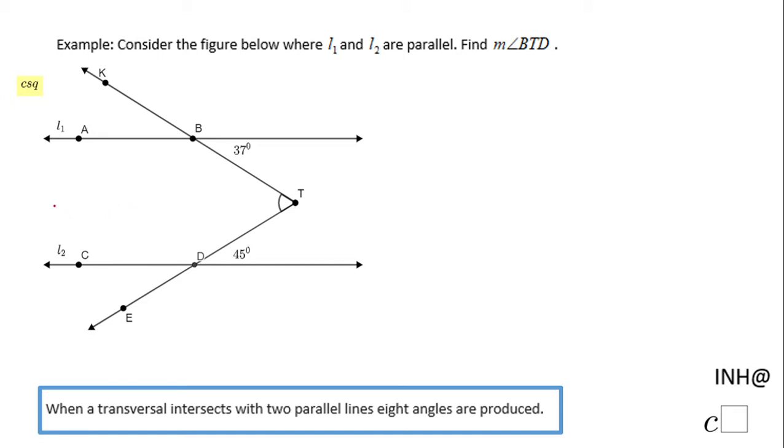For that reason I'm gonna drop an extra line, which I'm gonna call it L sub 3, and this line is parallel with L1 and L2. If you notice, this line cuts the angle BTD in two angles. The sum of these two angles is nothing but the angle BTD.